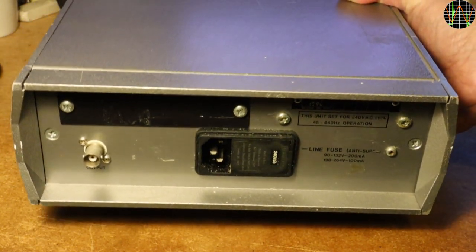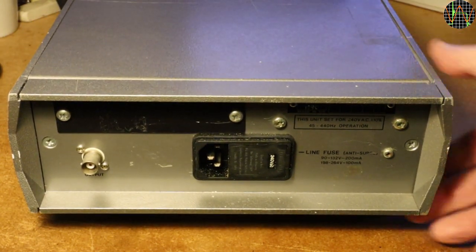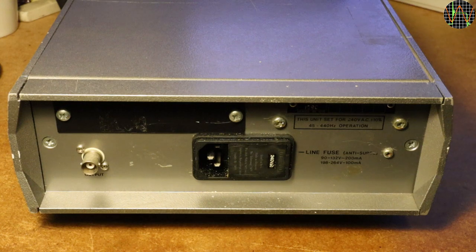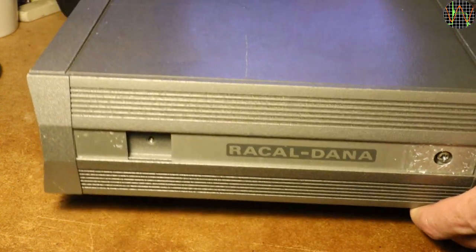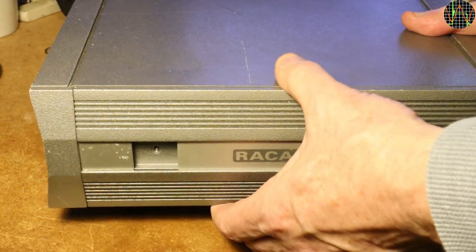The rear shows an IEC mains power inlet with fuse and a BNC output. A black strip hides the holes for a remote control option that isn't fitted to this meter. It came with a handle but I removed it because it just gets in the way since I'm not planning to move it around a lot.